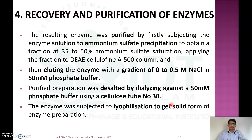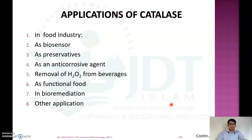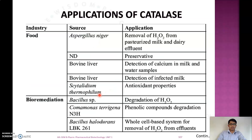Catalase has numerous applications. In the food industry, it is used as a biosensor, anti-corrosive agent, for removal of hydrogen peroxide from beverages, as a functional food ingredient, and in bioremediation. Specifically, catalase from Aspergillus niger is used for removal of hydrogen peroxide from pasteurized milk and dairy effluents, and also as a preservative.